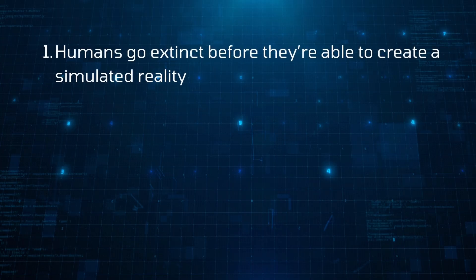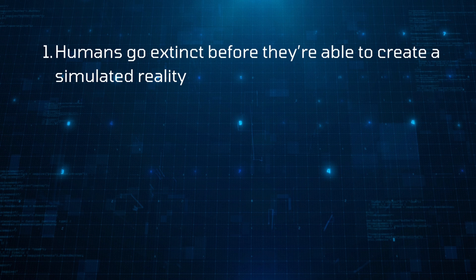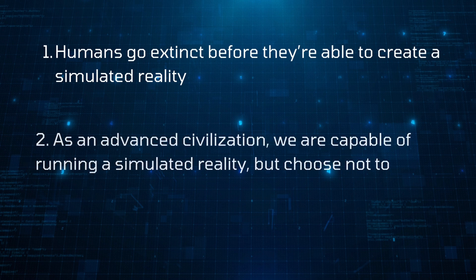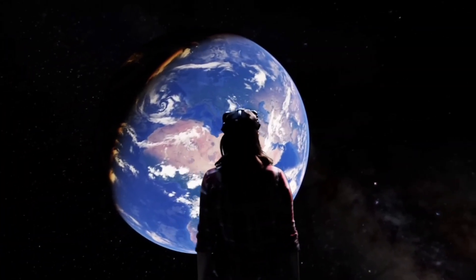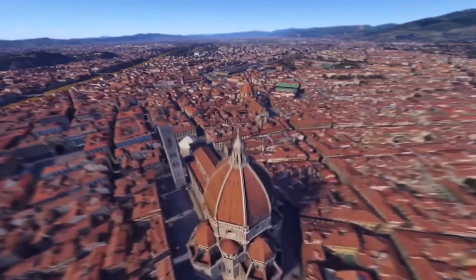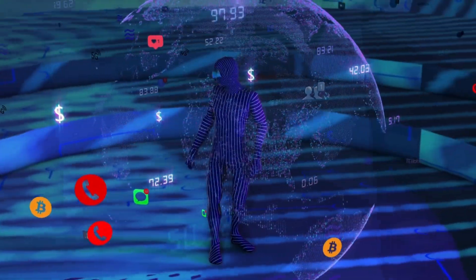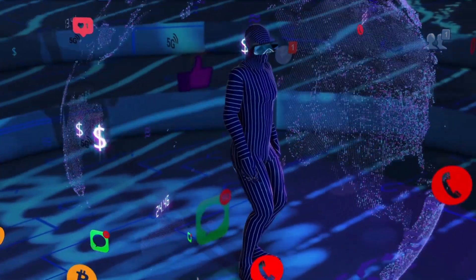Why do you think we might be living in a simulation? Well, I have this thing called the simulation argument, which doesn't actually prove that we're in a simulation, but it tries to show that at least one of three propositions is true. First, humans go extinct before they're able to create a simulated reality. Second, as an advanced civilization, we are capable of running a simulated reality but choose not to. And lastly, we are already living in a computer simulation. As Bostrom suggests, we can't prove that we are living in a simulation, but we also can't disprove it. So instead, we're going to explore some of the strongest arguments that support and debunk this mysterious theory.